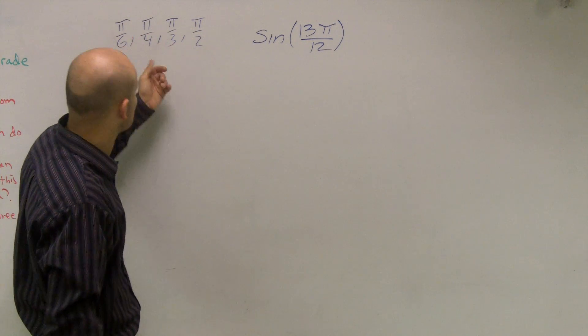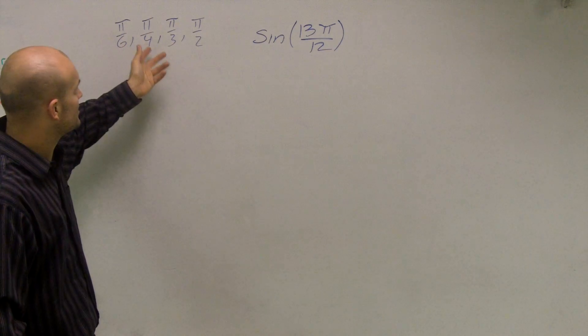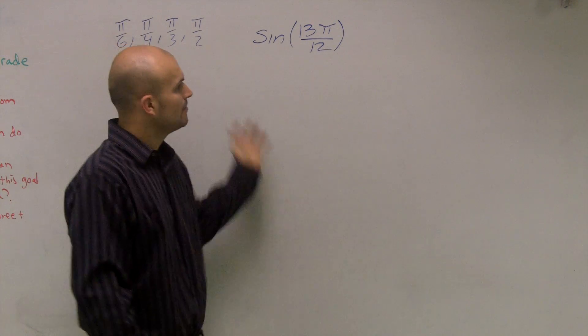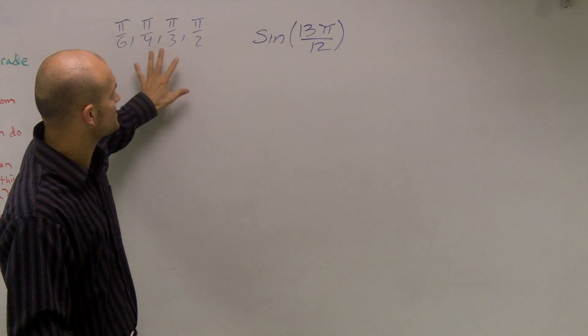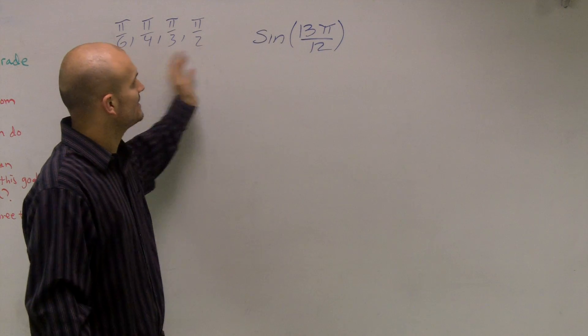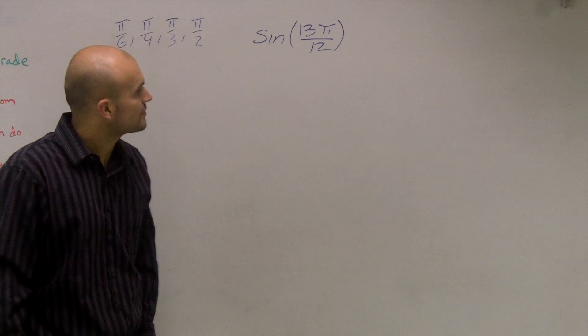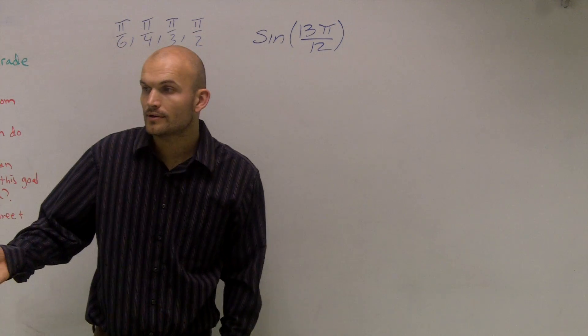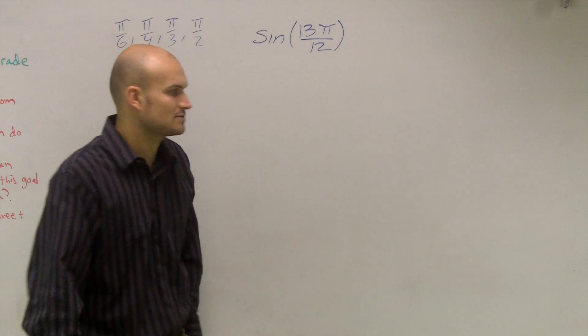Now obviously, we could just simplify this and say either π over 4 or π over 3. But when I'm trying to figure out what two numbers can I make that will either add up to 13π over 12 or subtract to give me 13π over 12?